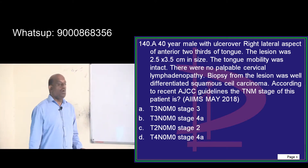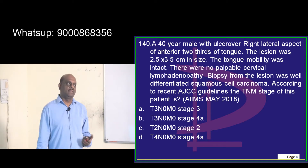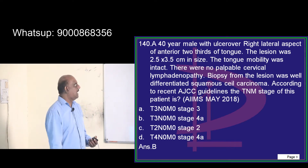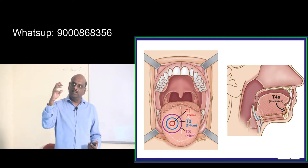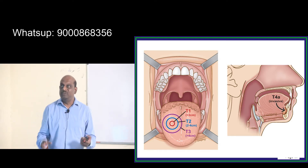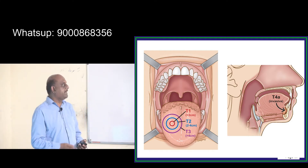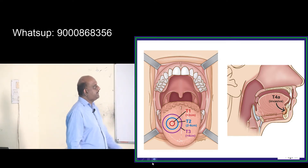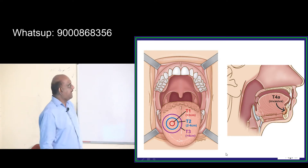For staging tongue cancer, you must review the American Joint Commission on Cancer TNM table. Oropharyngeal cancer is the most common cancer in this country, so examiners will definitely ask. T1 is less than 2 centimeters, T2 is 2 to 4 centimeters, T3 is more than 4 centimeters, and T4A is an invasive lesion — that is what you have to remember.